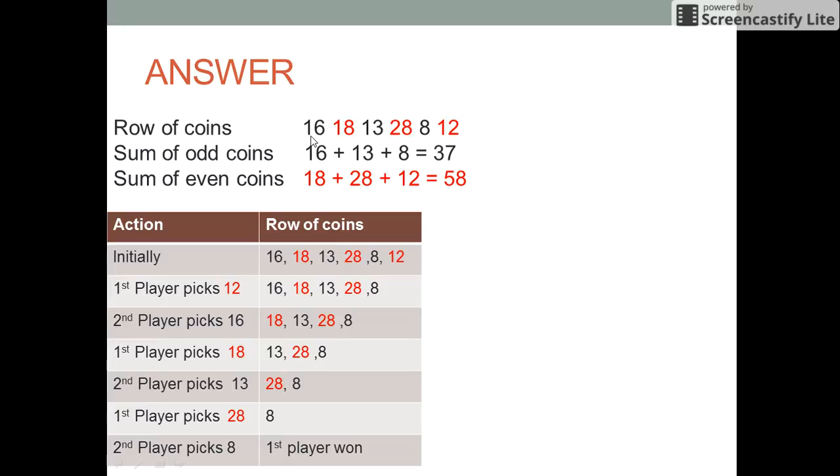Suppose the rows of coins arranged are these 6 coins. We first find the sum of the odd numbered coins, that is 16 plus 13 plus 8 which equals 37.